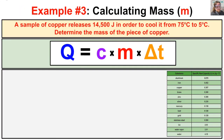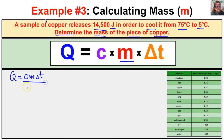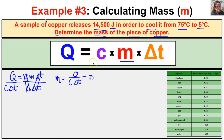Problem three: a sample of copper releases 14,500 joules cooling from 75 degrees Celsius to 5 degrees Celsius. Determine the mass of the copper. We need to solve for M in Q equals C times M times delta T, so we rearrange to M equals Q over C times delta T. Since the copper is releasing energy, Q is negative 14,500 joules.